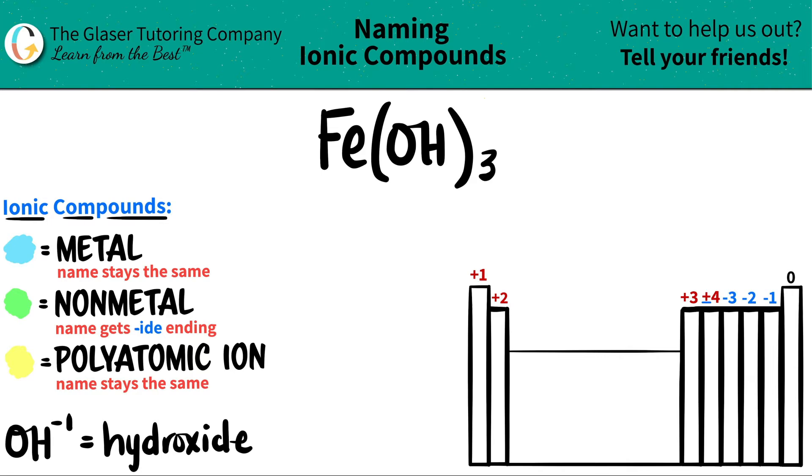So that's why I wrote down the polyatomic we're going to see here. Use flashcards or do whatever you got to do to just memorize these. So anytime that you see an OH for ionic compounds it will always have a negative one charge and it's always called hydroxide. So here is my polyatomic OH hydroxide.